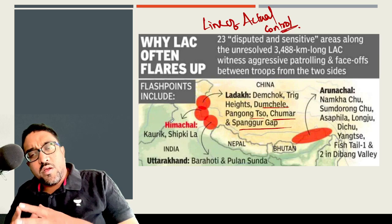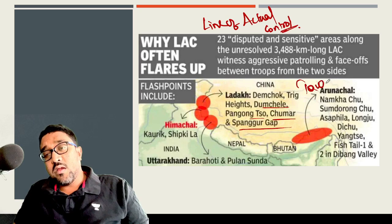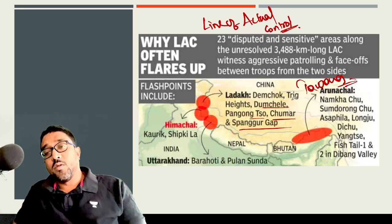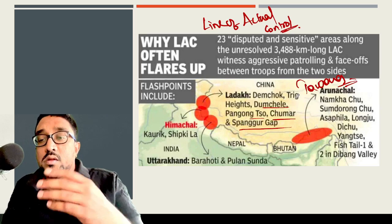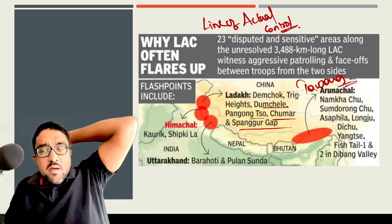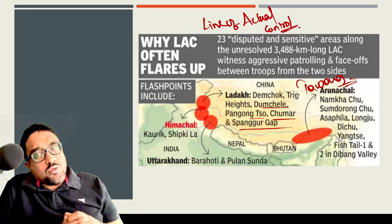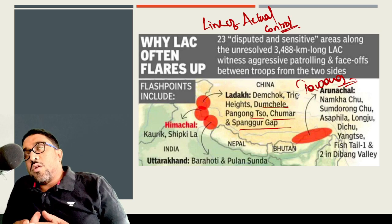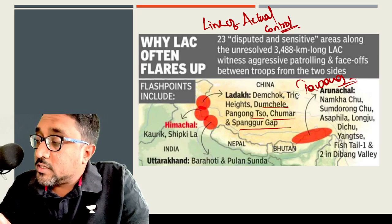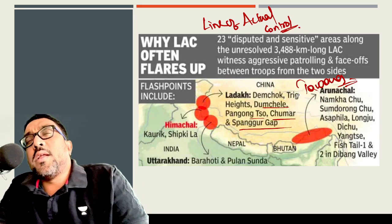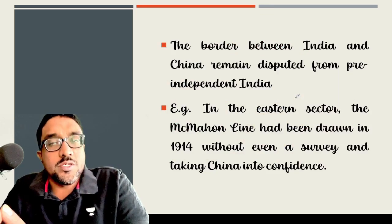But mainly in Himachal, in the Kaurik and Shipkila region, and also regions of Arunachal, mainly the Tamang territories — Sumdongchu, Asafila, Longju, Dishu, Yangtze, Fishtail 1 and Fishtail 2, and mainly in the Banga Valley. Even in Uttarakhand, Barahoti and Pulauan Sundabi do have disputes. 3,488 kilometers is the Line of Actual Control which India and China have as a sort of virtual border, and it is one of the most heavily patrolled borders in the world.